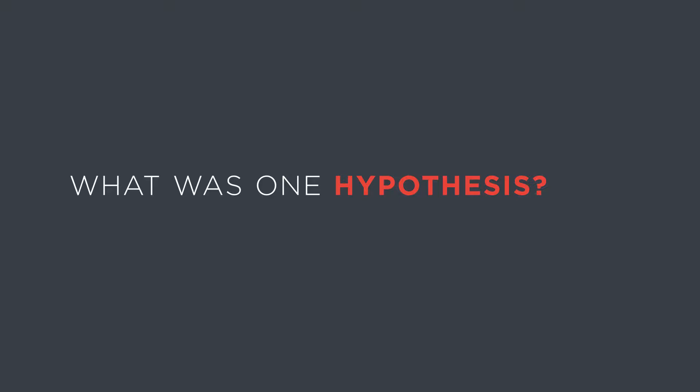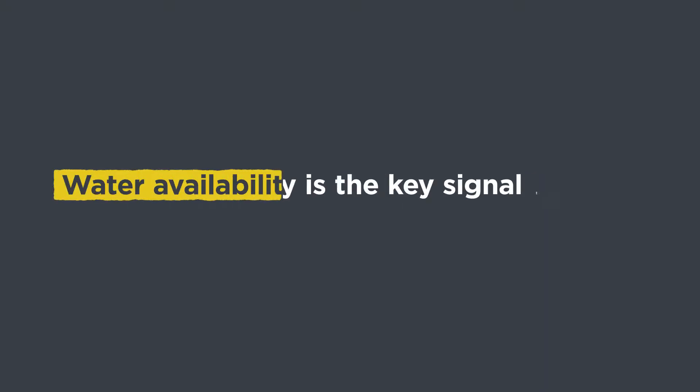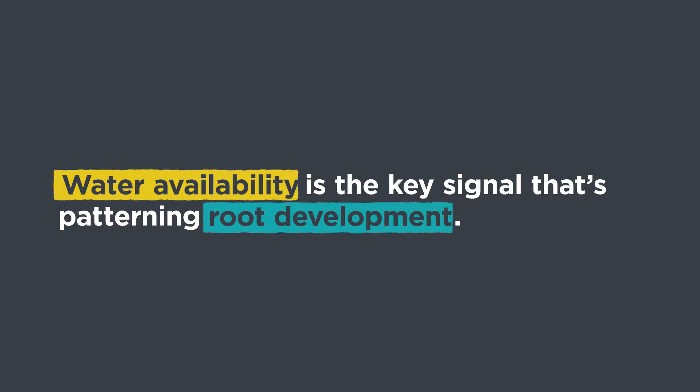For the hypothesis that water availability is the key signal patterning root development, once you come up with that hypothesis, you have to ask: what kind of experimental system exists where we can actually manipulate how much water is available around the root? That was something I had to come up with.